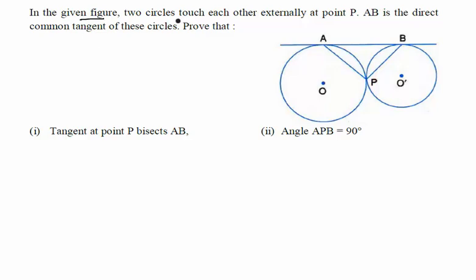In the given figure, two circles touch each other at point P. AB is the direct common tangent of these circles. With these given conditions, we have to prove that the tangent at point P bisects AB.